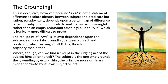This is somewhat deceptive, however, because A equals A is not a statement affirming absolute identity between subject and predicate, but rather, paradoxically, depends upon a certain gap of difference between the two in order to make sense as really meaningful rather than be an empty, redundant tautology. The real point of A equals A is therefore just its own dependence upon the existence of a certain grounding between subject and predicate, which we might call X. X is therefore more originary than either. Where can we find X, except in the judging act of the subject himself or herself? The subject is the one who grounds the grounding by establishing the principle more originary even than A equals A by its own subjective act. This subjective act is, of course, just the act of positing.